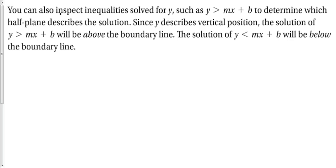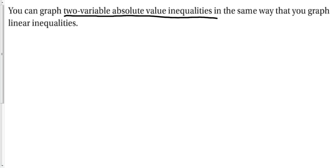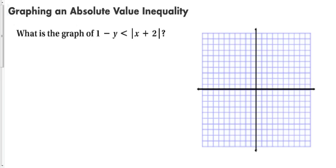Notice that for the greater than case, the region was above the line, and for the less than case, it was below the line. So instead of always using a test point, there's a shortcut: if the inequality is solved for y, then y greater than mx + b means shade above the boundary line, and y less than mx + b means shade below. Not only can we do this with linear inequalities, but we can also graph two variable absolute value inequalities.